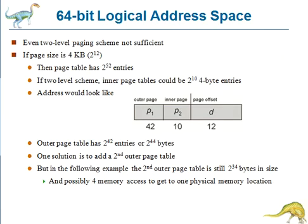For a system with a 64-bit logical address space, a two-level paging scheme is no longer appropriate. With a page size of 4 KB, that is 2 power 12, the page table will consist of up to 2 power 52 entries. The addresses would look like this: outer page 42 bits, inner page 10 bits, and the remaining offset is 12 bits. The outer page table consists of 2 power 42 entries, or up to 2 power 44 bytes.